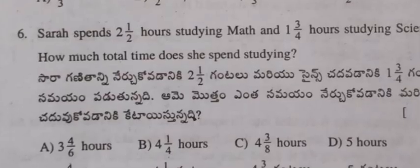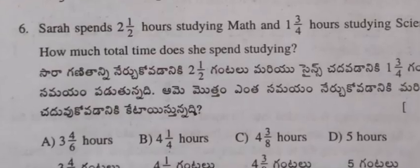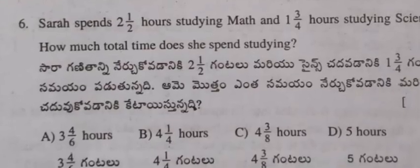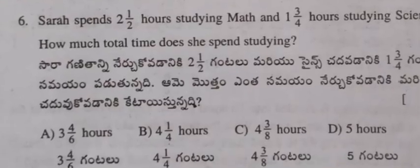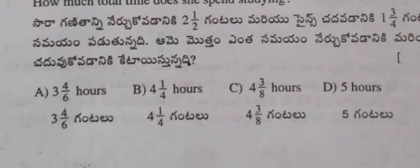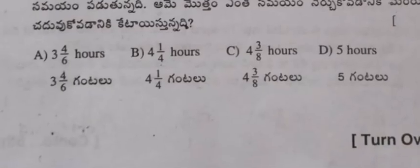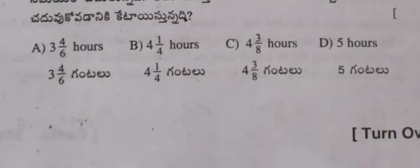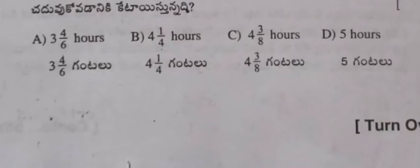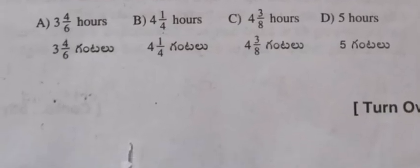Question 6: Sara spends 2 and 1/2 hours studying math and 1 and 3/4 hours studying science. How much total time does she spend studying? (A) 3 and 4/6 hours, (B) 4 and 1/4 hours, (C) 4 and 3/8 hours, (D) 5 hours.